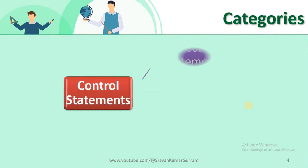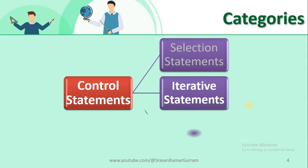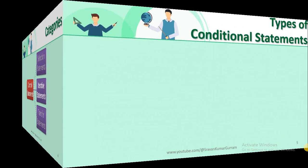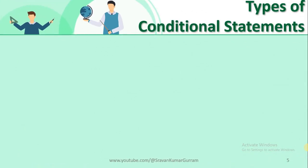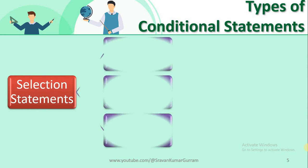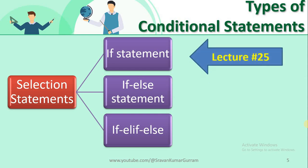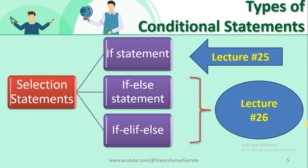We started the concept of control statements already. In control statements we have three categories: selection statements, iterative statements, and transfer statements. Selection statements are also called conditional statements, and within selection statements we have three categories: the if statement (covered in lecture 25), and if-else and if-else-if (covered in lecture 26), completing the selection statements topic.